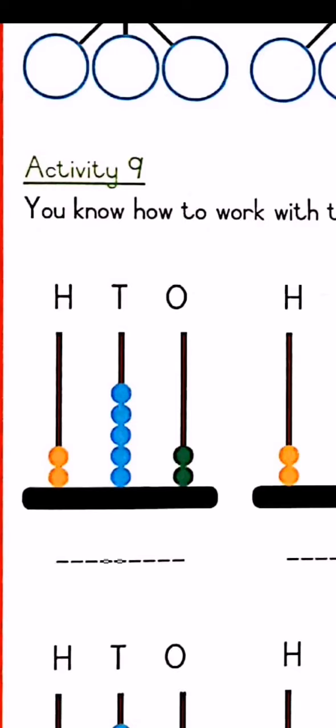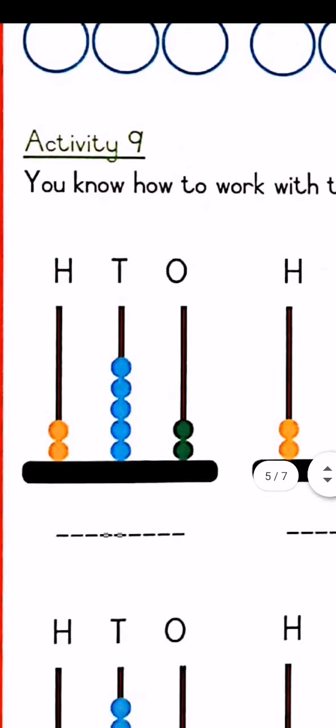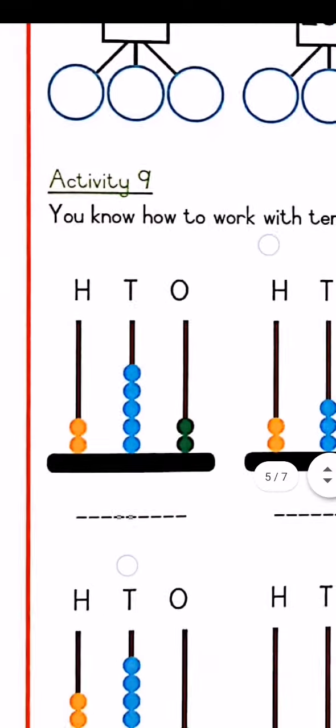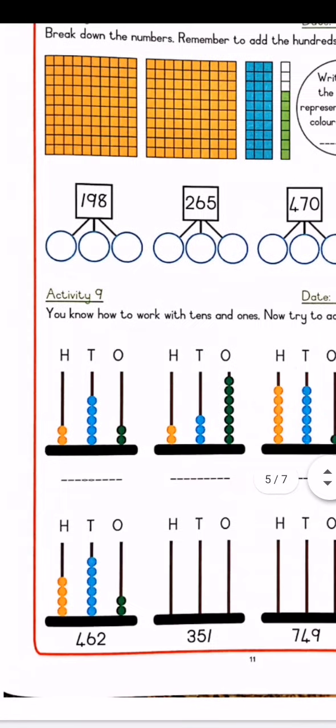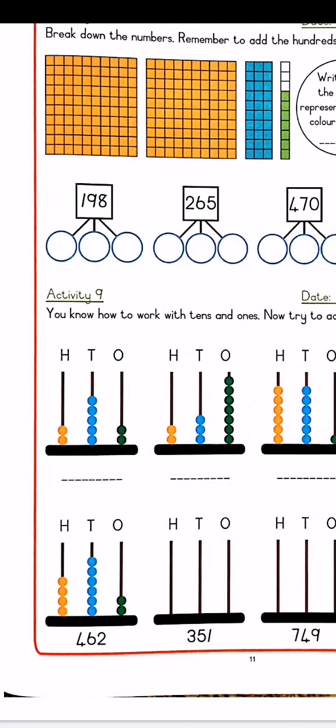So you can just count the amount of beads and write that number down. So the orange beads, they are 2. So write down 2 for 200. The blue beads are 1, 2, 3, 4, 5. So you write 5 down for 10s. And then your green beads are 1, 2. So you write 2 again for your 1s. So your number will be 252. Then you do the same with your other counters, with your other abacuses, with your beads.